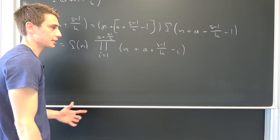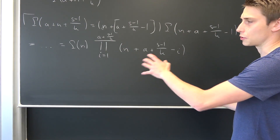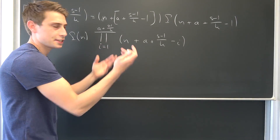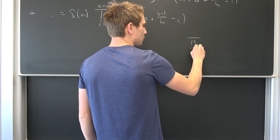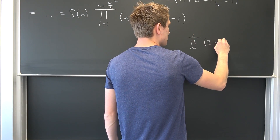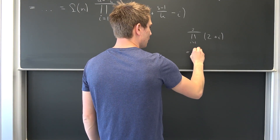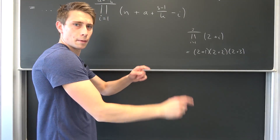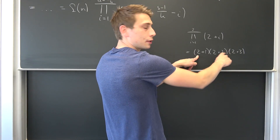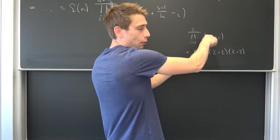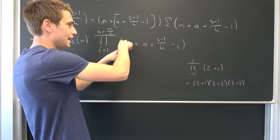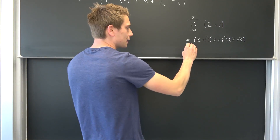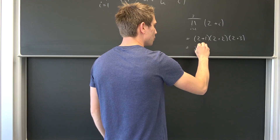I hope you could follow that. Consider a simple example: the product from i = 1 to 3 of (2 + i) gives us (2+1)(2+2)(2+3). There is a factor of 2 in all of these, and n plays the same role as that constant 2. We can factor out the 2 — a 2 here, a 2 here, a 2 here — giving us 2 to the third power, i.e., 2 to the power of the upper limit of the product, times the remaining chunk with all terms divided by 2.